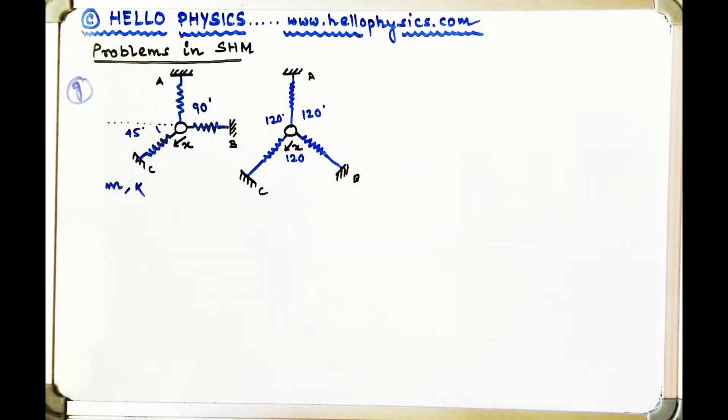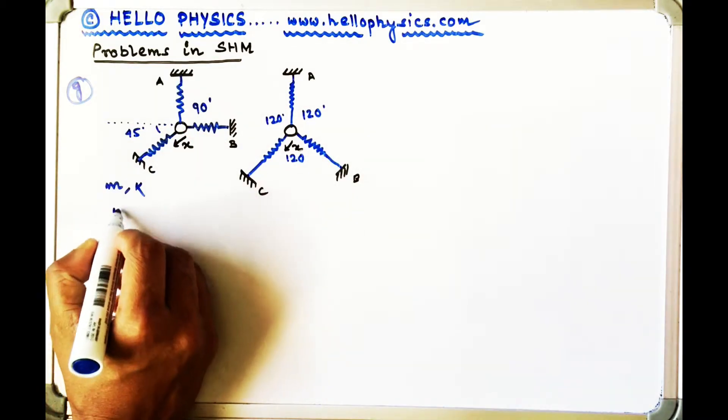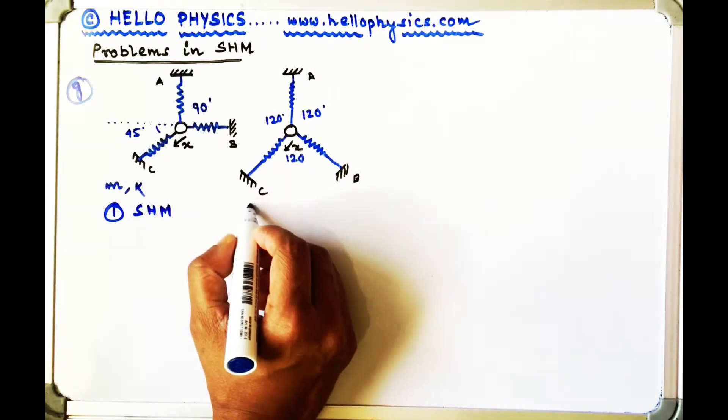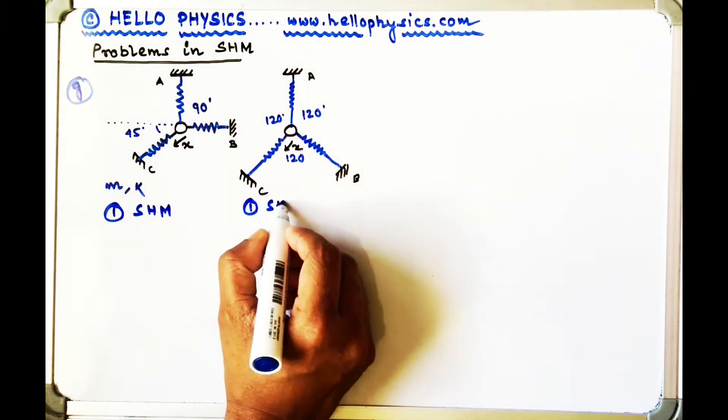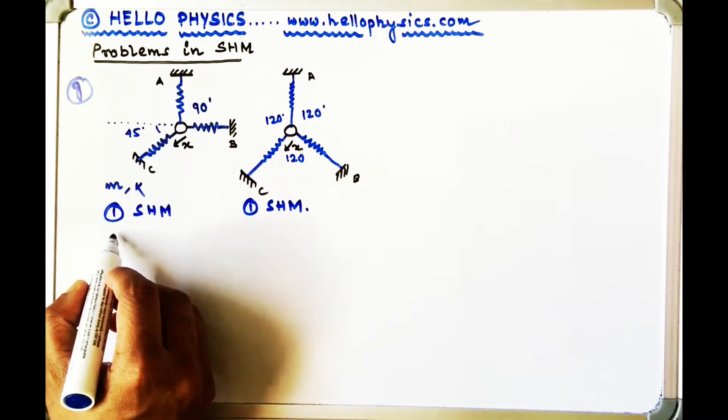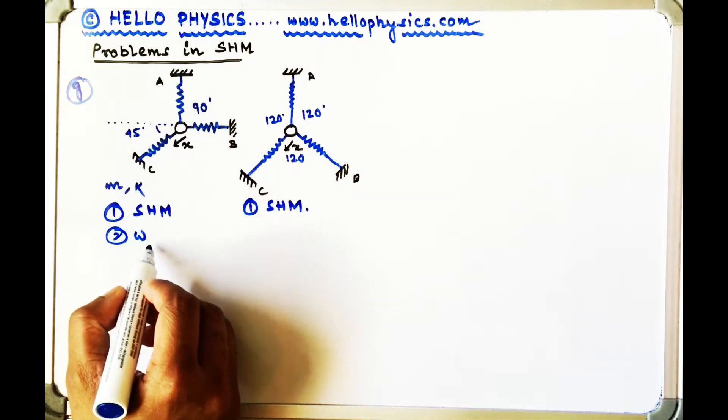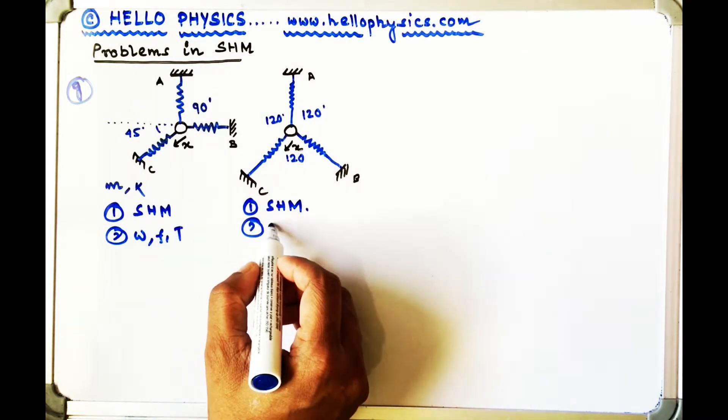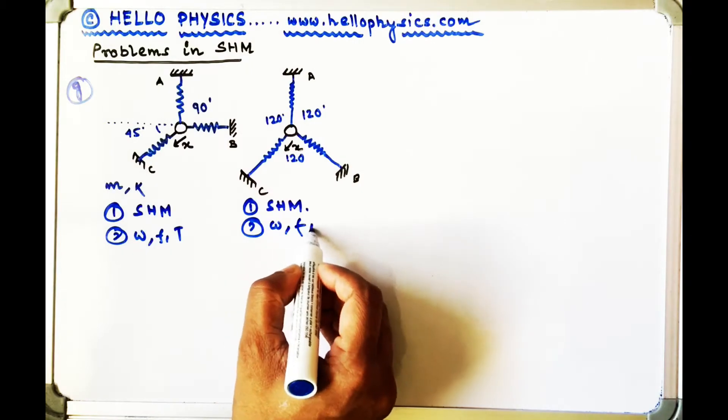What you have to do is, after the system is released, you have to find out whether we have an SHM over here. Also, in the second setup, we have an SHM over here. If it's a case of SHM, we have to find out what is omega, what is F, what is T, in both the cases.